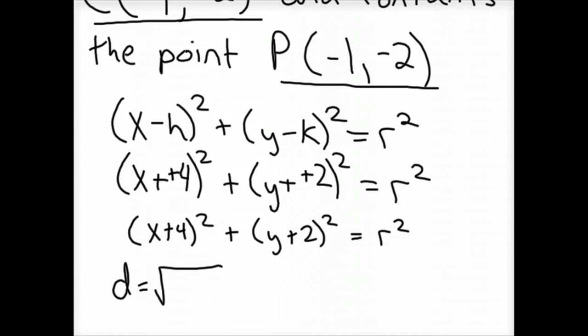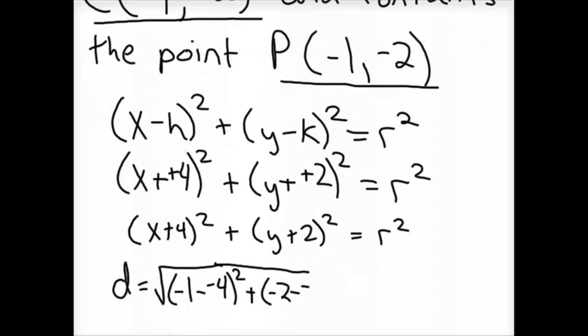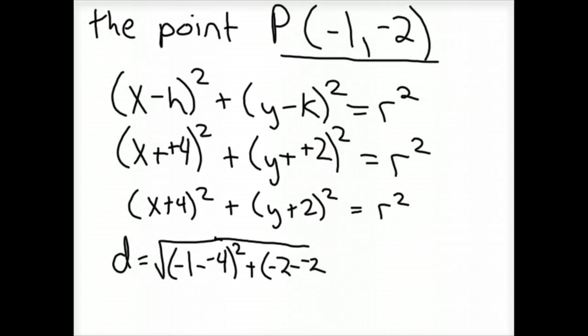or in our case the radius equals, the square root of negative 1 minus a negative 4 squared plus a negative 2 minus a negative of, let's see, I said 4 negative 2 squared. Yep, minus negative 2 squared.